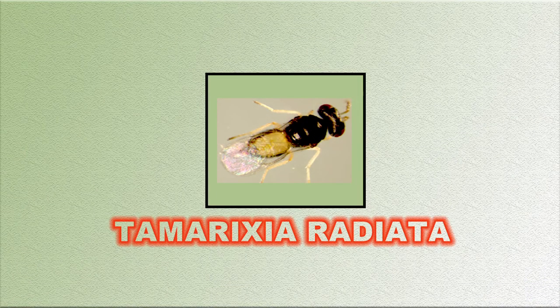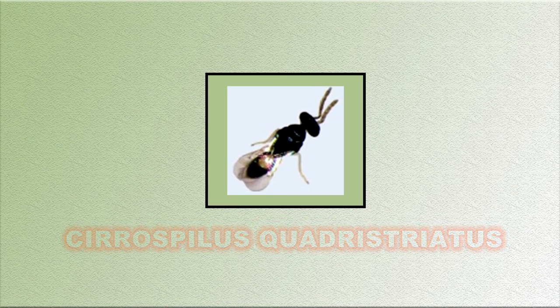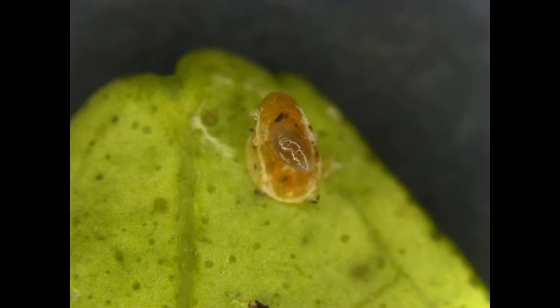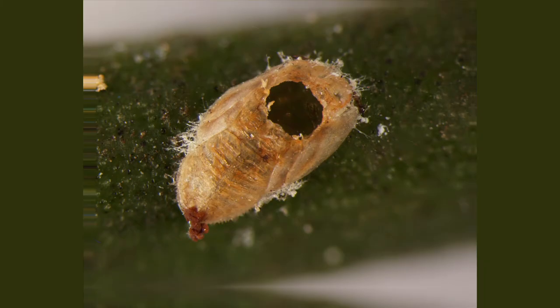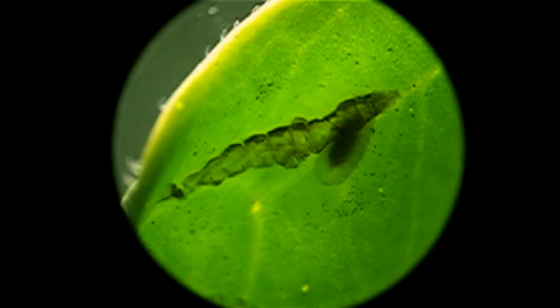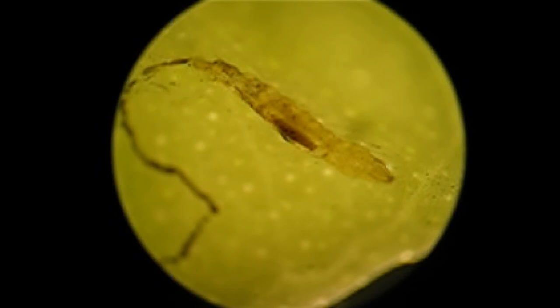Among the parasitoids, Tamarixia radiata, Cirrospilus caudatus, and Citrostichus phyllocnistoides are the important ones. Tamarixia radiata is an ectoparasitoid of Asian citrus psyllid; its larva feeds on the hemolymph of the psyllid, pupates inside mummified nymphs, and emerges in 9–14 days by making a hole through the thorax of the host. Citrostichus phyllocnistoides prefers mid-instars of citrus leaf miner and lays a single egg on the host, while Cirrospilus caudatus females deposit an egg on last-instar larvae or pupae within the pupal chamber, finally killing the leaf miner larva.